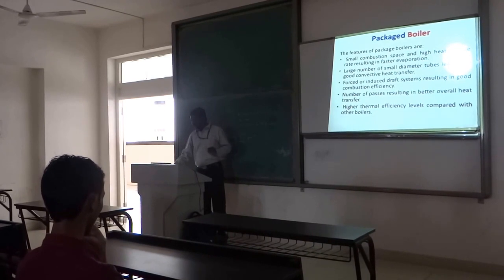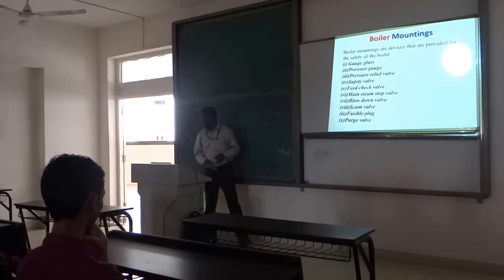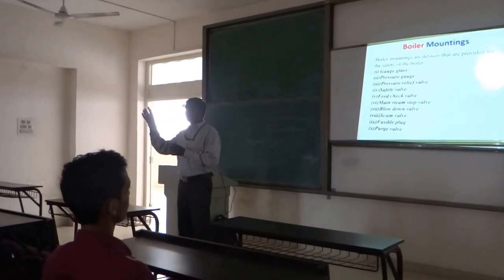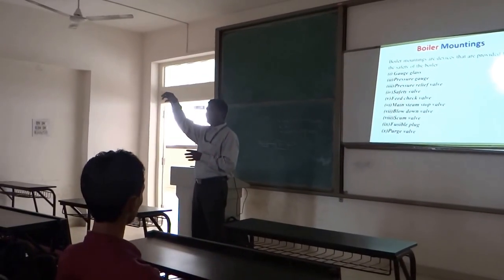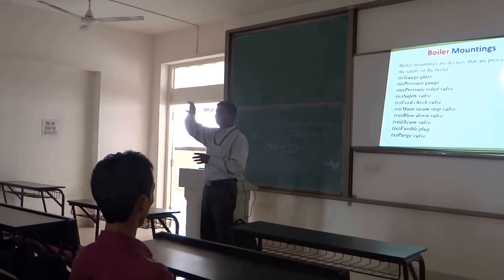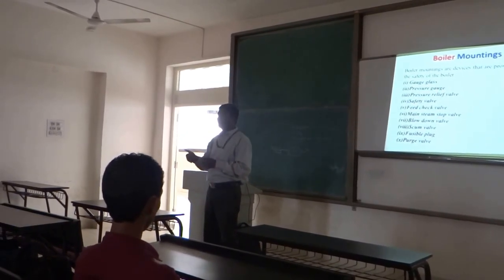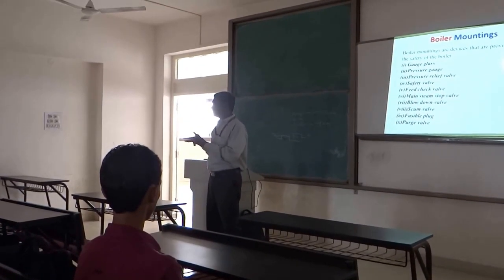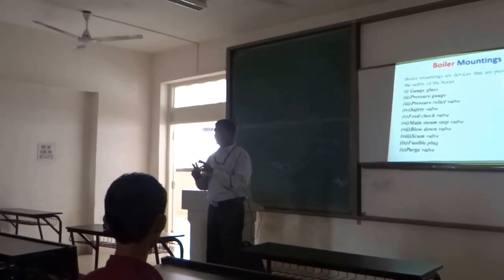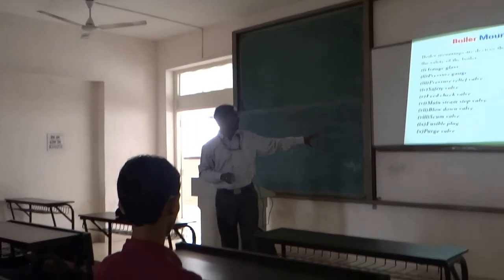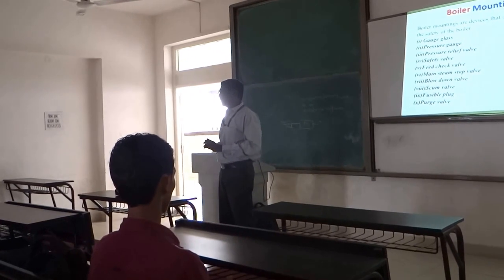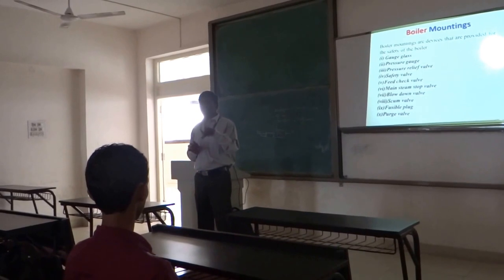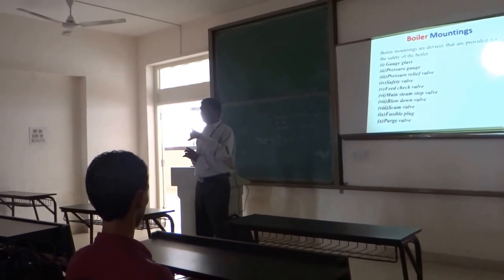Now let's come to boiler mountings. As I said earlier, boiler mountings are devices which will be incorporated or placed within the boiler with reference to the safety of the boiler as well as safety of the personnel operating the boiler. We have 10 such devices which we call as boiler mountings. One is gauge glass — gauge glass is a water level indicator which indicates the level of water within the boiler.